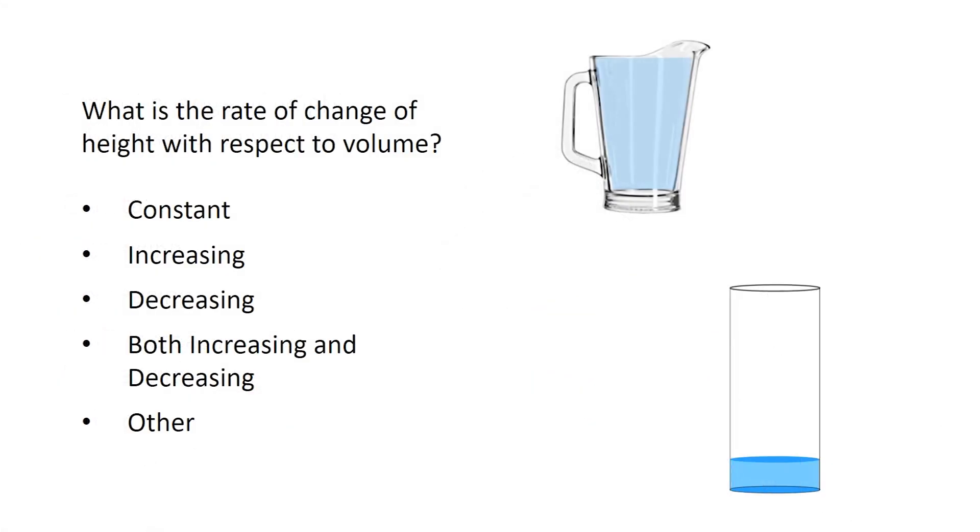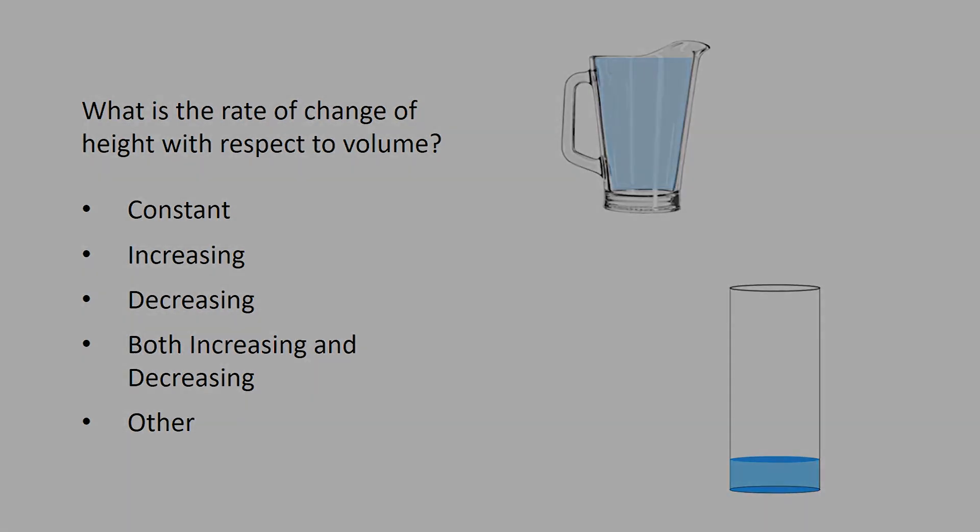In this video, Julian and Alyssa tried to determine the rate of change of height with respect to volume. They came up with reasons for why it might be increasing or decreasing or constant. We'll explore how to think about this problem in upcoming videos.